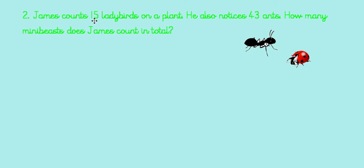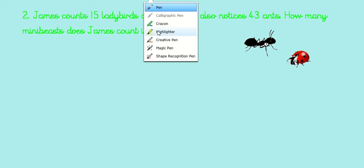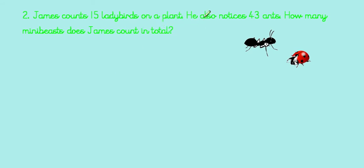Remembering to read the question really carefully first. James counts 15 ladybirds on a plant, very good because that's going to be part of our learning journey. He also notices 43 ants. How many minibeasts does James count in total? Now remember, we look for that vocabulary that gives us a clue. I've seen also, that means in addition to or extra. How many minibeasts in total? So it's telling us, can you add that one and that one and find me a total.